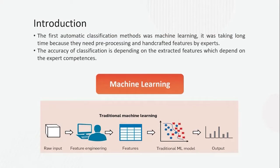The first automatic classification method was machine learning. It required a long time because it needs a pre-processing step and handcrafted features by experts — it is not automatic feature extraction. The accuracy of classification depends on the extracted features, which depends on the expert's competence. The steps of machine learning contain five steps: input, feature engineering, extracted features, traditional machine learning model, and output.